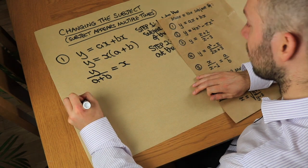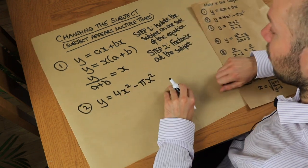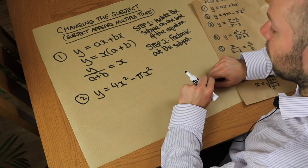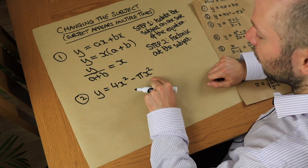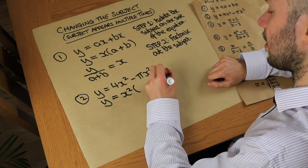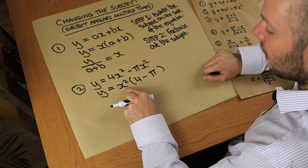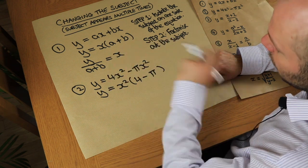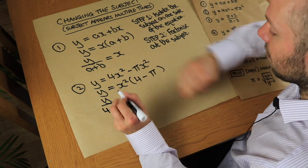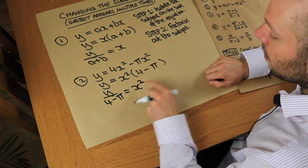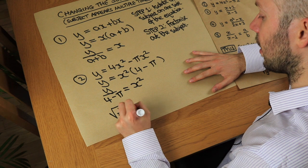Let's try that strategy with some others. We have y equals 4x² minus πx². Step one is already done because x only appears on one side of the equation. Step two: factorize out the subject. This time we can factorize out x². So x² brackets — x² times 4 is 4x², minus x² times π is πx². Then x is being squared and multiplied by (4 minus π). The last thing done was multiply by (4 minus π), so we divide both sides by (4 minus π) to get just x².